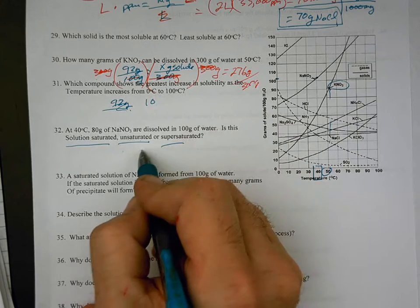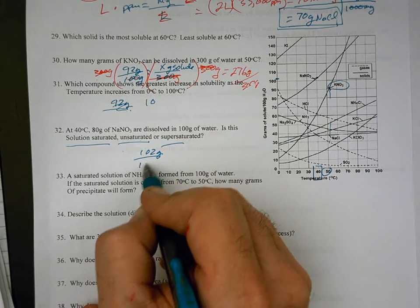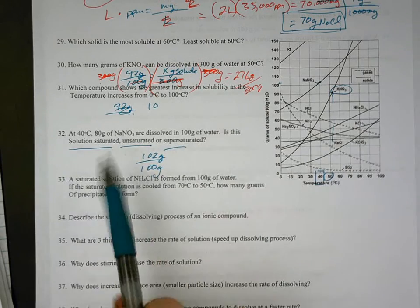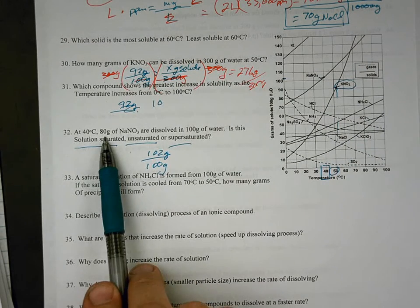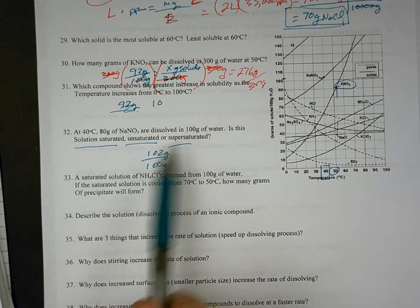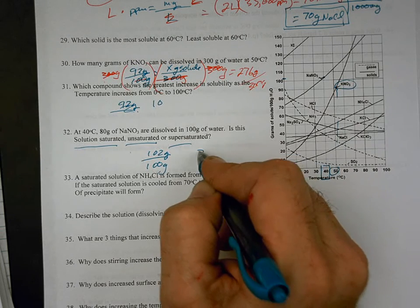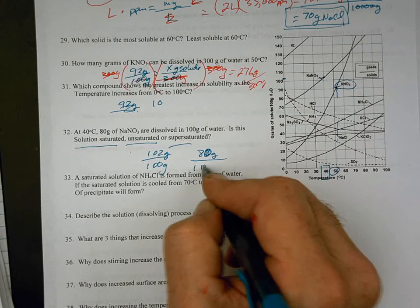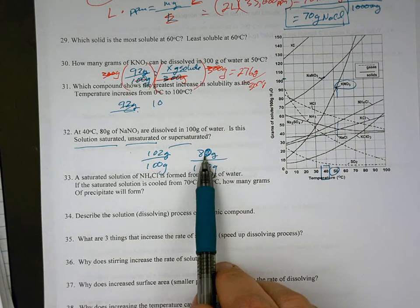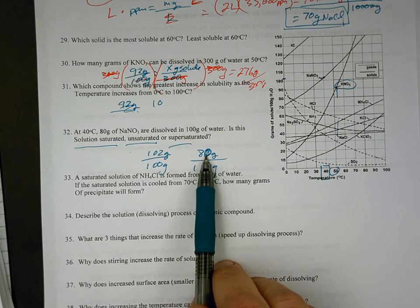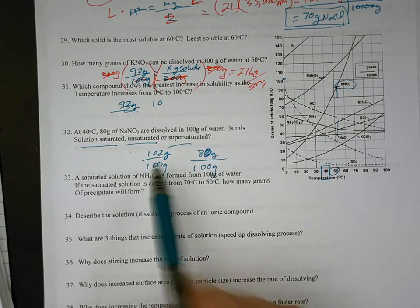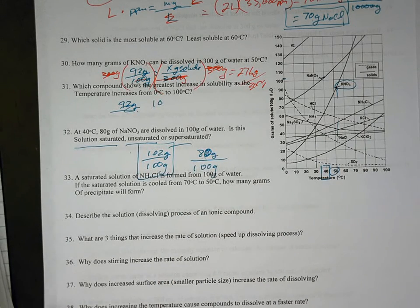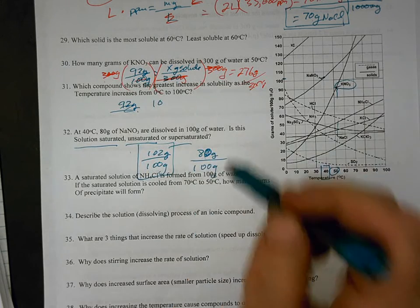So that's the solubility. Now, the question says, if we had 80 grams per 100, can we add more? Yeah, we actually can because we could at 40 degrees have 102 grams. We only have 80. So would that make this solution saturated?